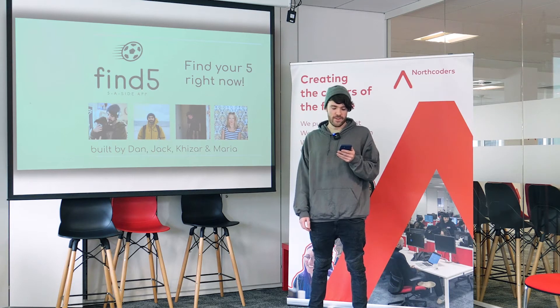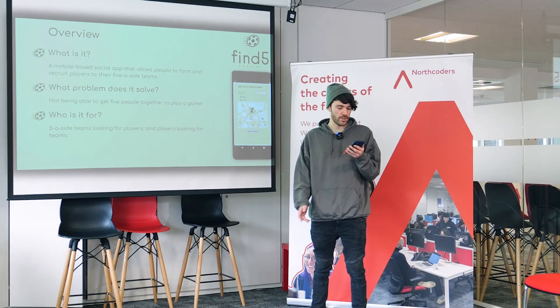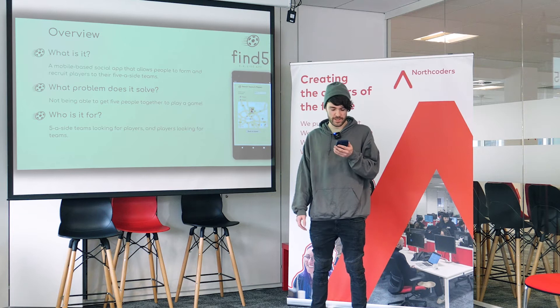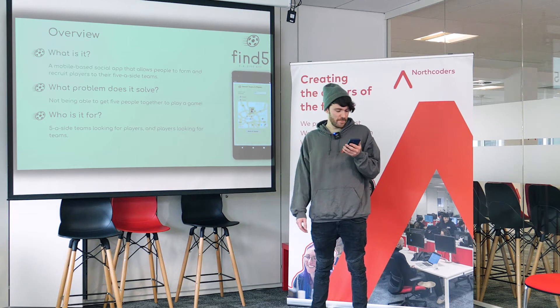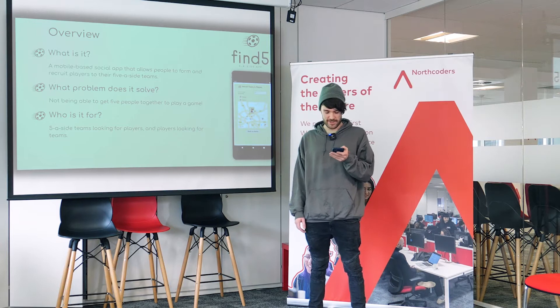Find 5 is a football-centred social app which allows users to connect with like-minded people on things like skill, age, and availability. No one wants to turn up to a 5-a-side game only to realise everyone else is Prime Messi, meanwhile you have no idea what the offside rule is. Find 5 aims to save you from this embarrassment.